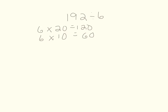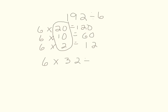I know that 6 times 2 is equal to 12. So now I take the factors I multiplied 6 by, add them together, and I have 6 times 32 equals 192. So 192 divided by 6 is equal to 32.